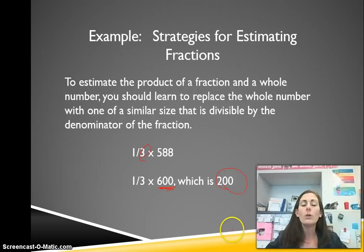A good compatible number that the denominator can go into would be 600 and it's close to 588. So one-third times 600 would be 200. Replace the whole number with one of a similar size that is divisible by the denominator of the fraction.